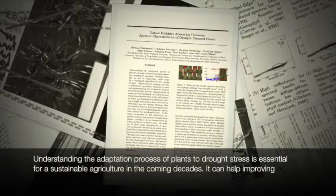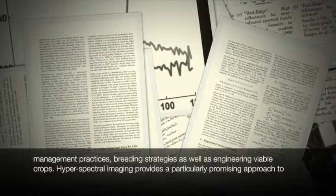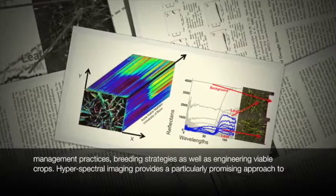Understanding the adaptation process of plants to drought stress is essential for sustainable agriculture in the coming decades. It can help improve management practices, breeding strategies, as well as engineering viable crops.